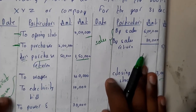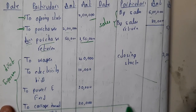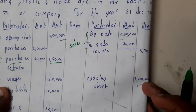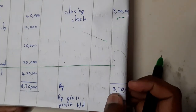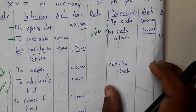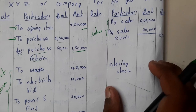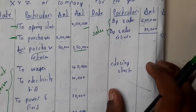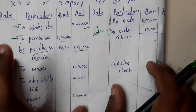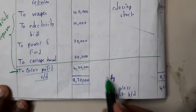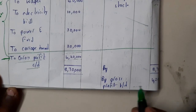All direct expenses go on the left side. Once the table is updated, calculate the total of the right side: five lakhs seventy thousand plus three lakhs equals eight lakhs seventy thousand. Subtract the left side total from the right side total — if positive, it's gross profit; if negative, it's gross loss. We got a gross profit of four lakh twenty thousand, carried down.